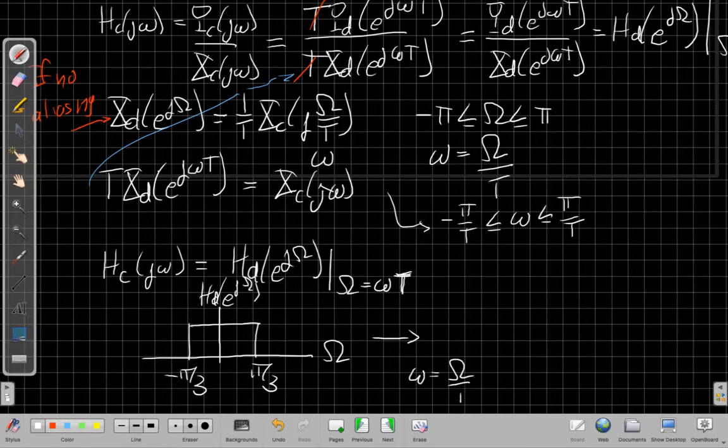In discrete time, well that becomes, we say that the new effective filter would be cut off. If this is, we'll call this ω₀ for my cutoff, the continuous time cutoff would be that π/3 times 1/T, which is 300.